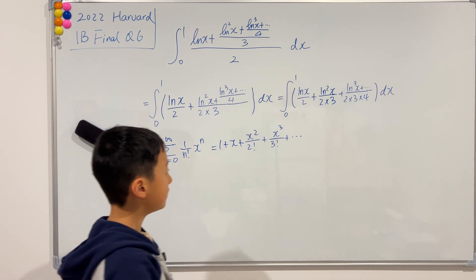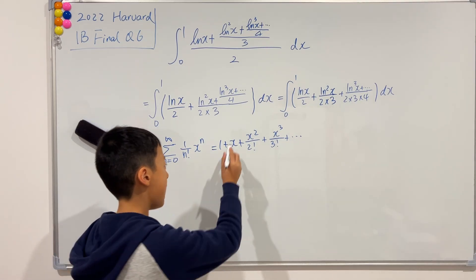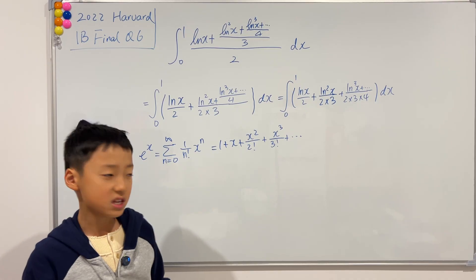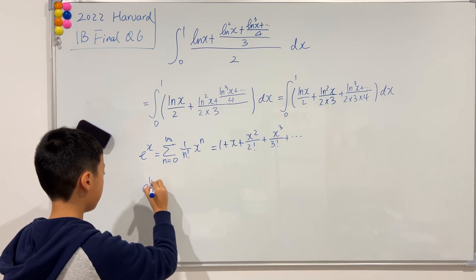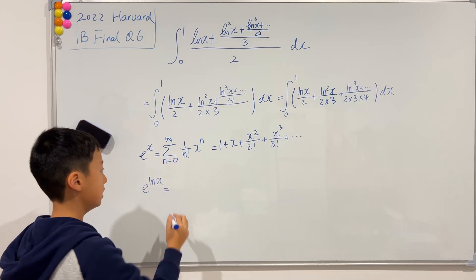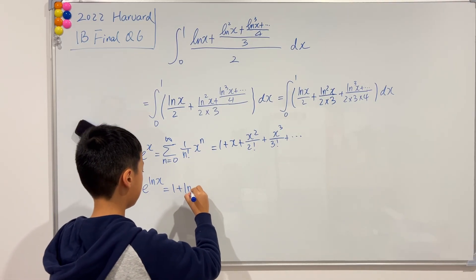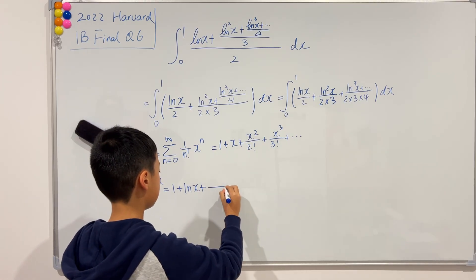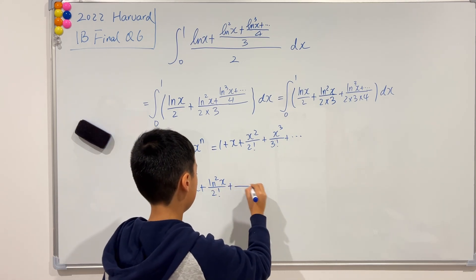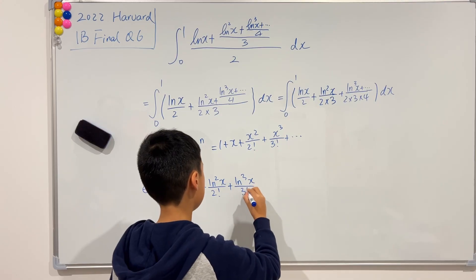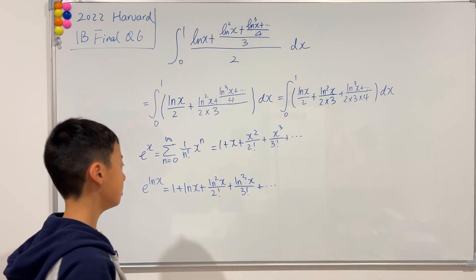Now can we see that this looks very similar to our integral? There's one major problem — the series has x, but our integral has ln(x). That's actually an easy fix: we can just replace x with ln(x). So e to the power of ln(x) equals 1 + ln(x) + ln²(x)/2! + ln³(x)/3! and so on.